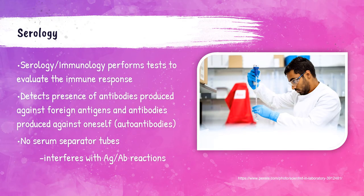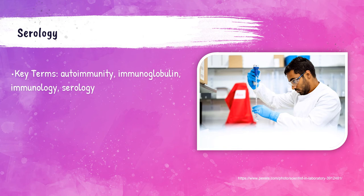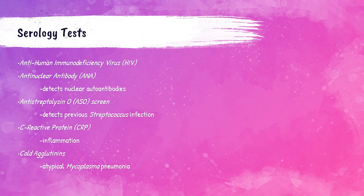The serology or immunology department performs testing to evaluate the body's immune responses. It looks for antibodies produced against foreign antigens and antibodies produced against oneself — called autoantibodies. Serum separator tubes can interfere with antigen-antibody reactions and cannot be used for this type of testing. Key terms include: autoimmunity — when the body produces antibodies that attack its own antigens; immunoglobulin — another term for antibodies; and serology and immunology.